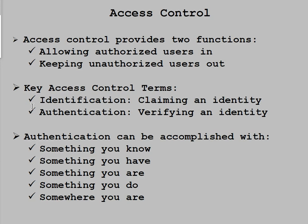You can either have something that you know. What would be an example of something that we know from an authentication standpoint? A PIN number, password — something that needs to be memorized. Something you have — a smart card, PKI, a key fob or something like that. Or lastly, something that you are. So anything where you have the ability to prove yourself through your own individual characteristics.